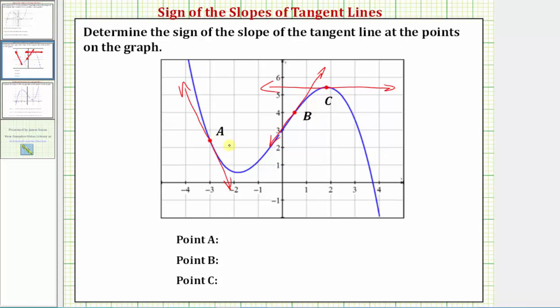Notice how the tangent line at point a is going downhill from left to right, which indicates the slope of the tangent line is negative. So if we use m to represent the slope of the tangent line, we could say at point a the slope m is less than zero, which means the slope is negative.